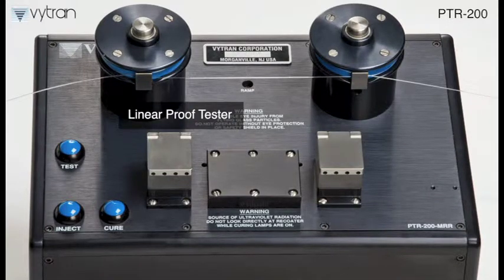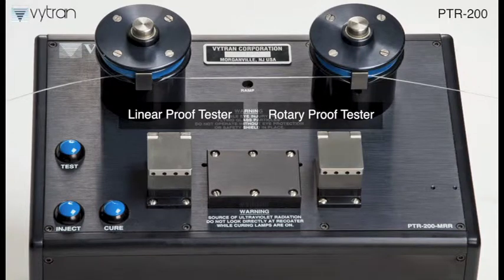Vytran offers both a linear proof tester and a rotary proof tester that features our unique rotating mandrel design. Our linear proof tester is intended for proof testing to a tension level of up to 20 newtons or 235 KPSI for a 125 micron fiber.